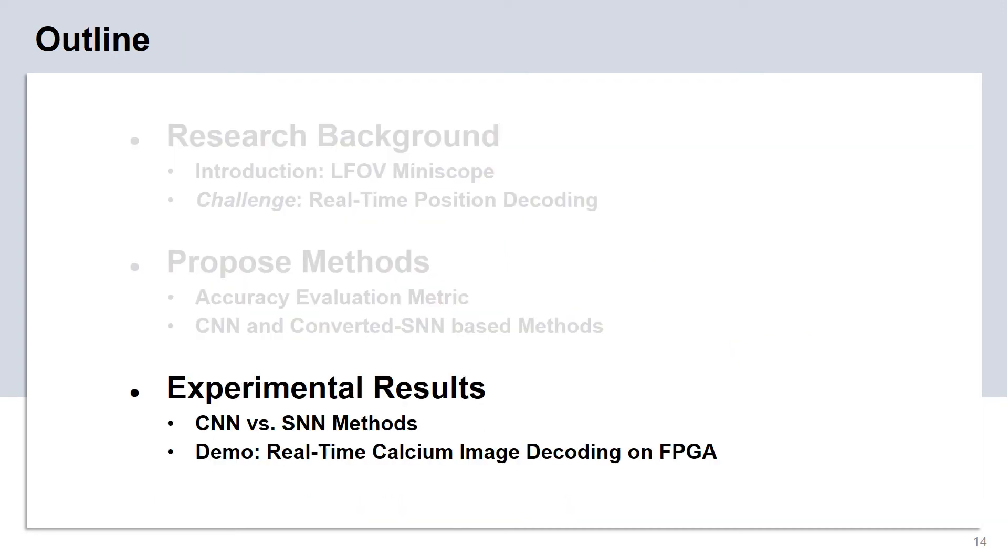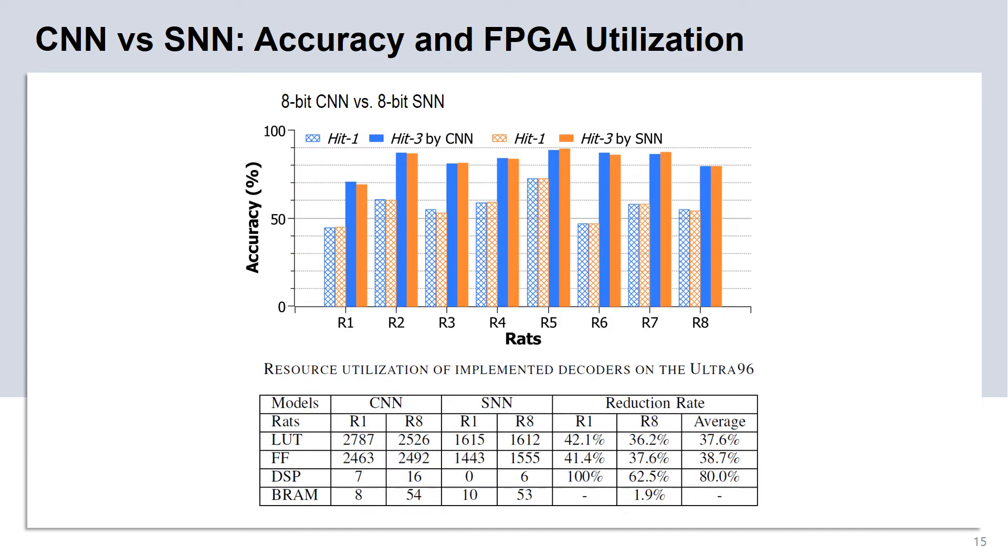Next, let's move on to the evaluation and implementation. We trained CNN models across datasets collected from 8 different rats. We quantized the CNN model into 8 bits, and converted 8-bit CNN into 8-bit SNN model. We evaluated the decoding accuracy of the CNN and SNN models using the same datasets. According to our evaluation results based on the HIT1 and HIT3 metrics, the SNN models have very similar decoding accuracy compared to the CNN models.